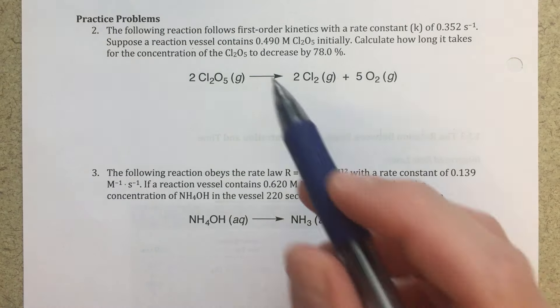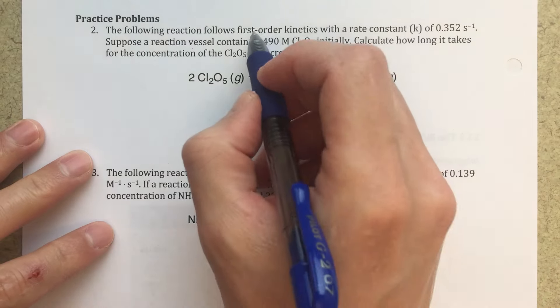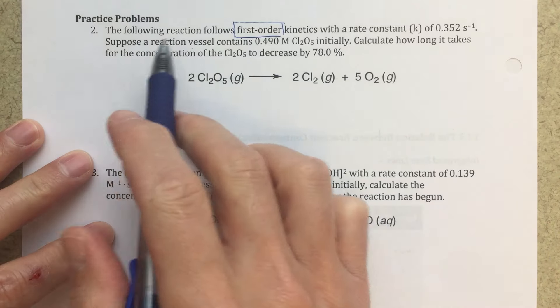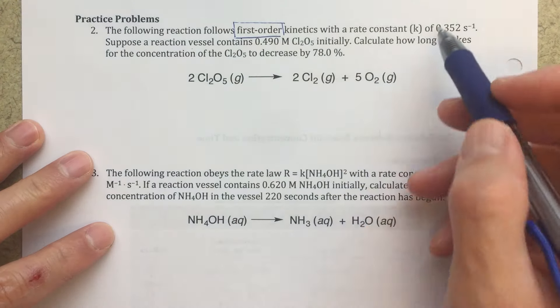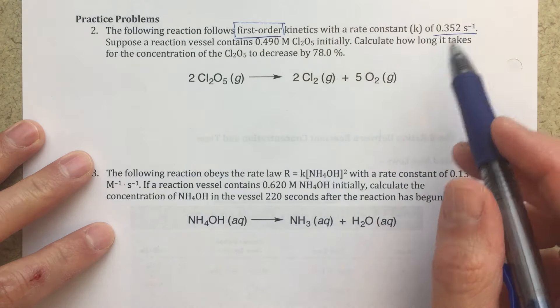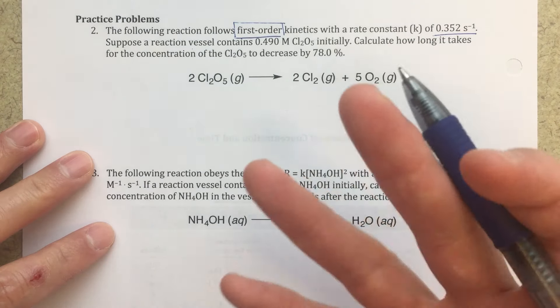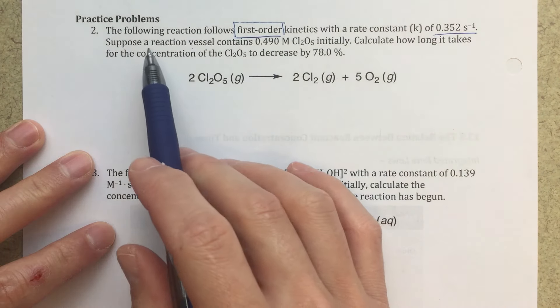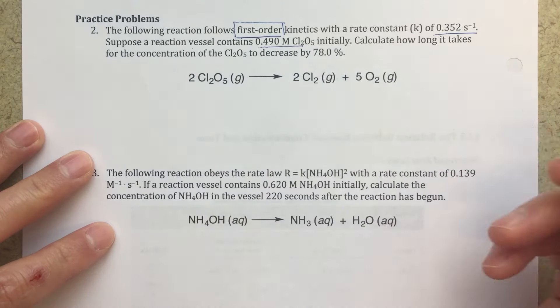So the first thing that we're going to do is organize our information. We're seeing that it's first order. So that's the first thing that jumps out at me. The following reaction follows first order kinetics, so we're told that information right away with a rate constant. So we're given that rate constant here, 0.352 seconds to the minus one. Again, those units on those rate constants are going to be variable based off of first order, second order, zero order. Suppose a reaction vessel contains 0.49 molar initially. So that's my initial concentration.